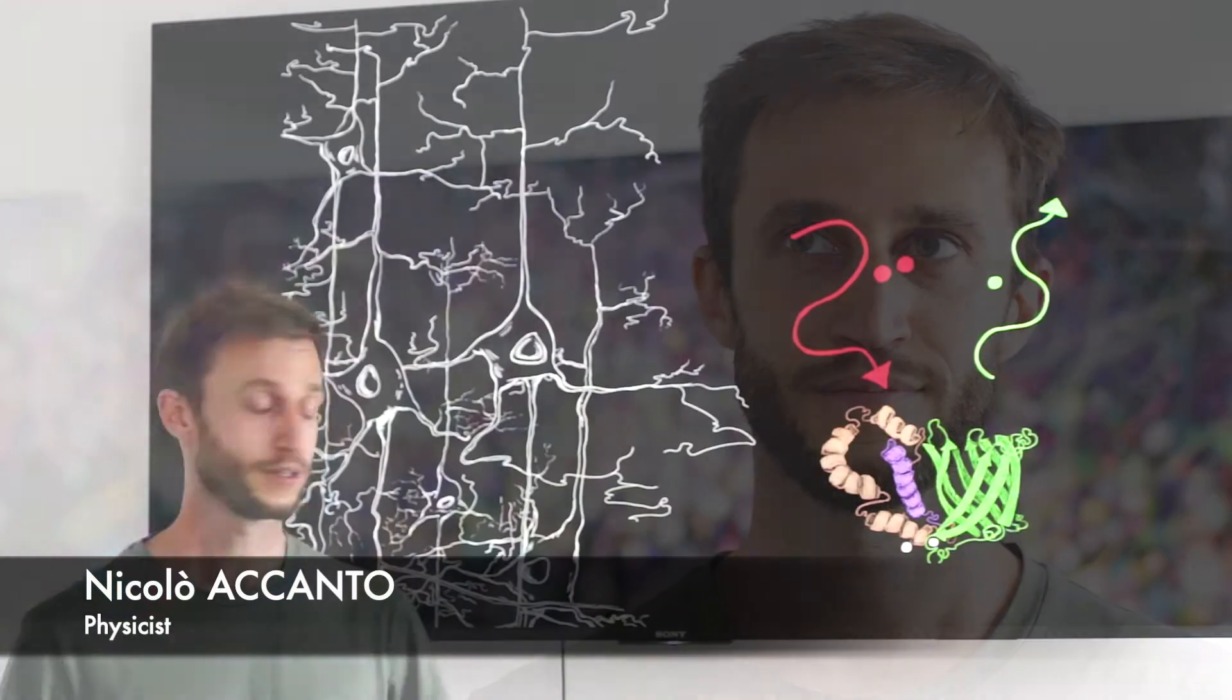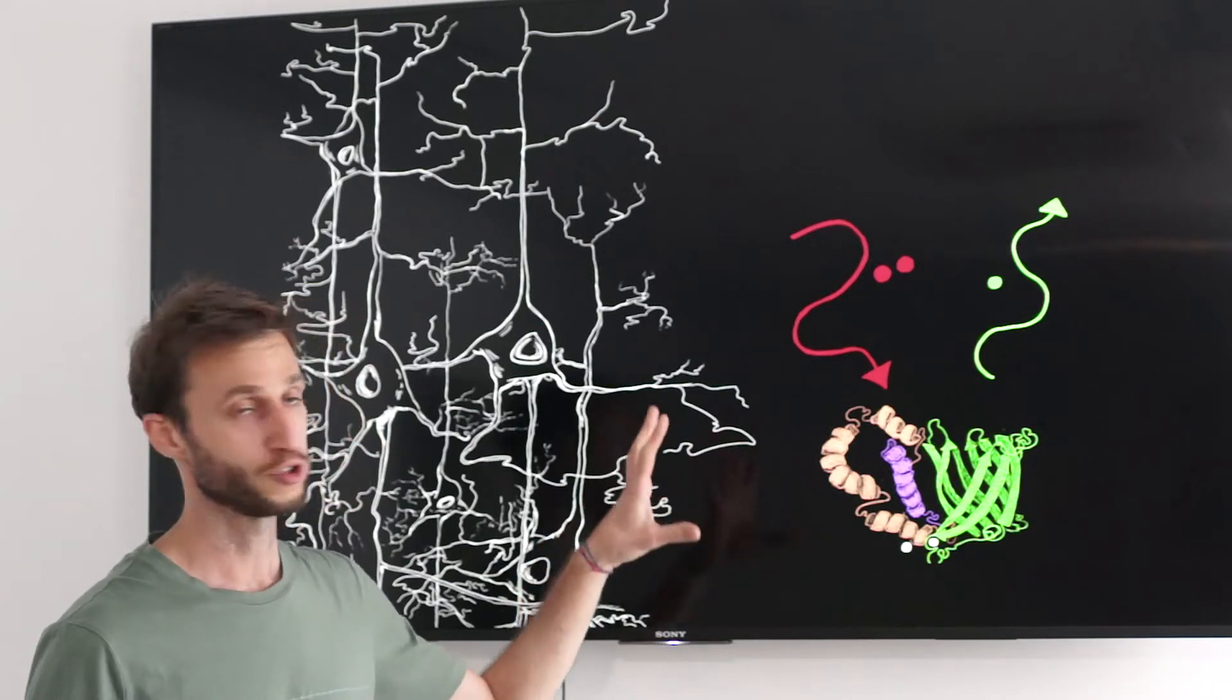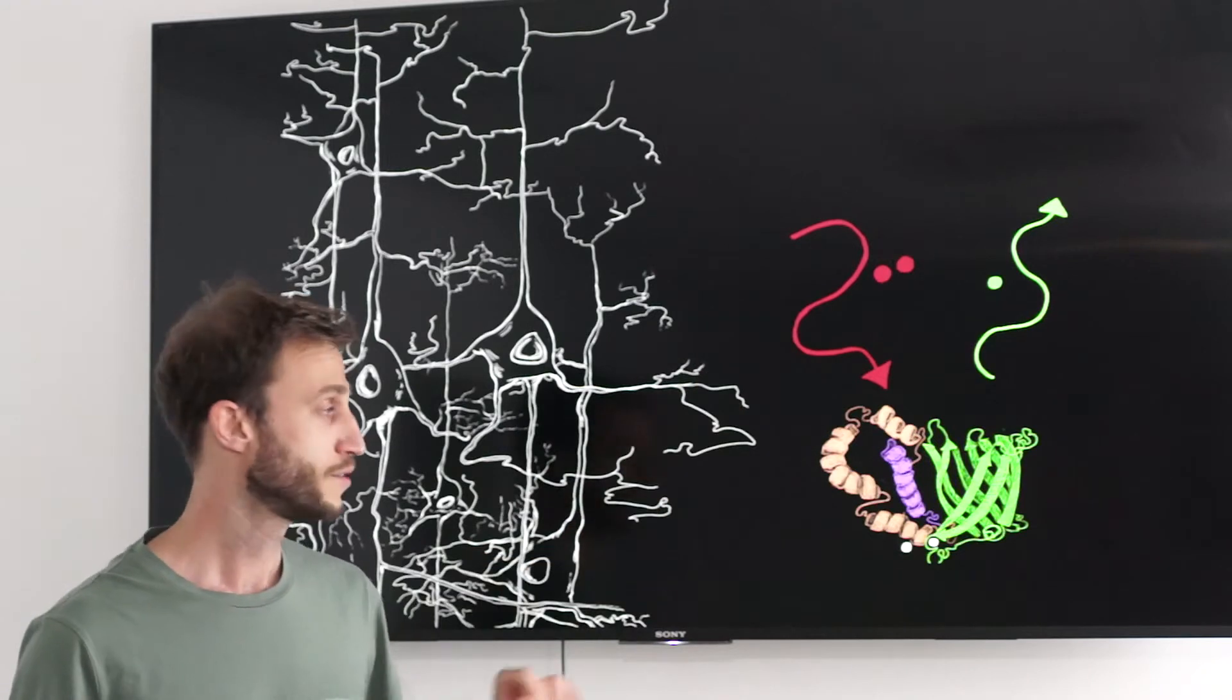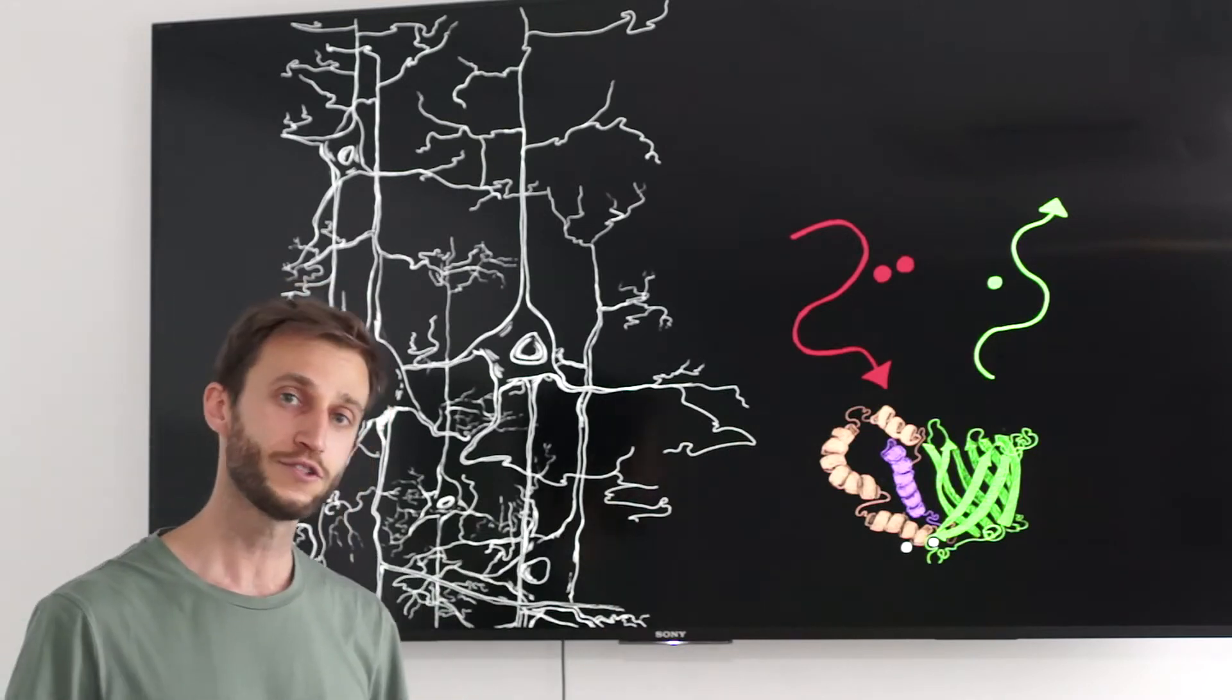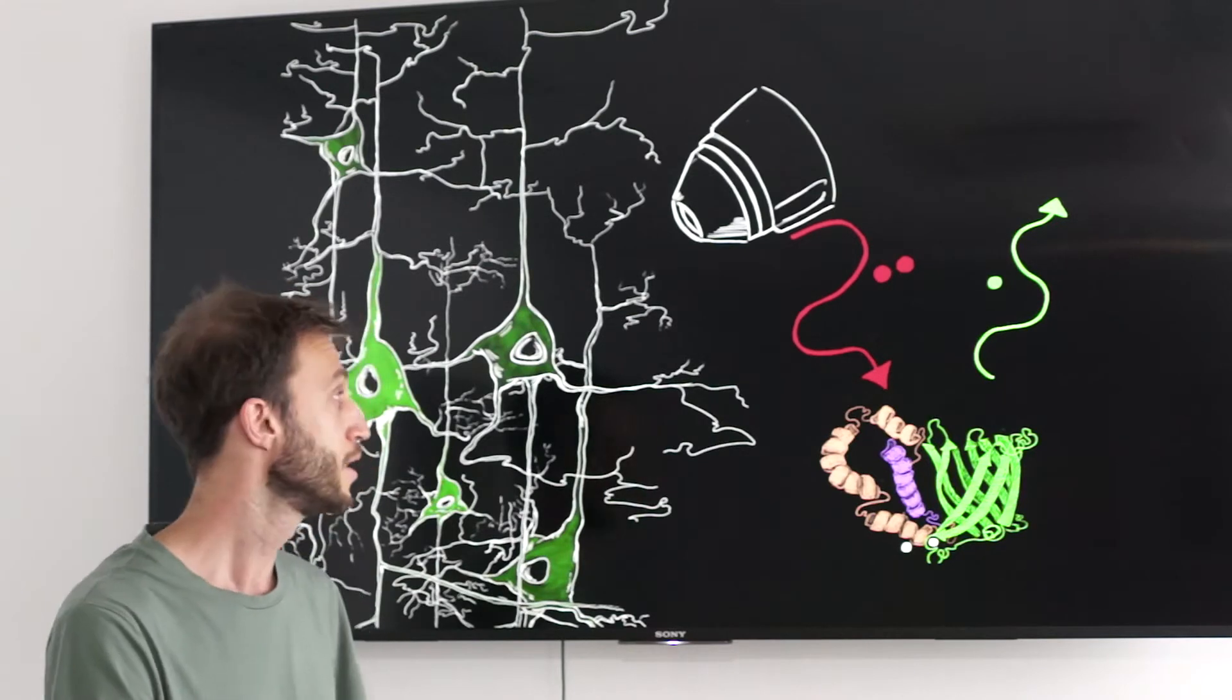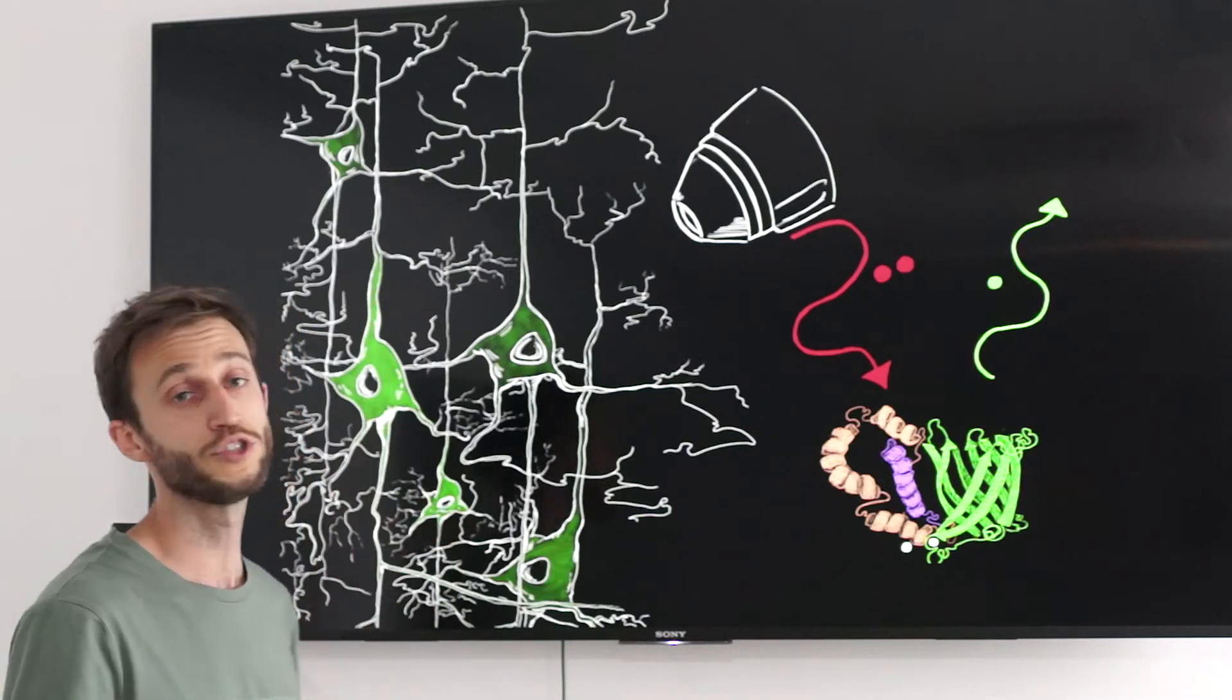Thank you very much for the question. Today, the most used method to image neuronal activity in the brain is by using two-photon microscopy. In two-photon microscopy, you have two photons from the same laser pulse that are absorbed simultaneously by a fluorophore that then re-emits a fluorescent photon. There's at least two benefits if you want to do two-photon microscopy to study the brain. The first one is that it allows us to focus deeper light into the brain, which is a scattering tissue.